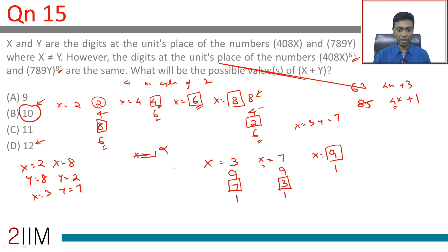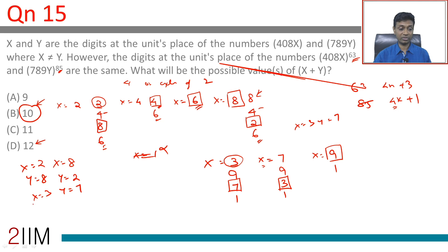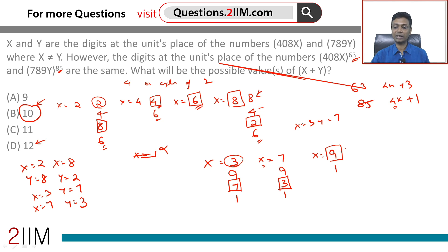If x is 7, the last digit of the power ends in 3. For y to have the last digit 3, y will have to be 3. So x equals 7, y equals 3 remains a possibility. If x equals 9, then the unit digit is 9, and y will have to end with 9. But that means x would equal y, which is not possible. So none of those work.